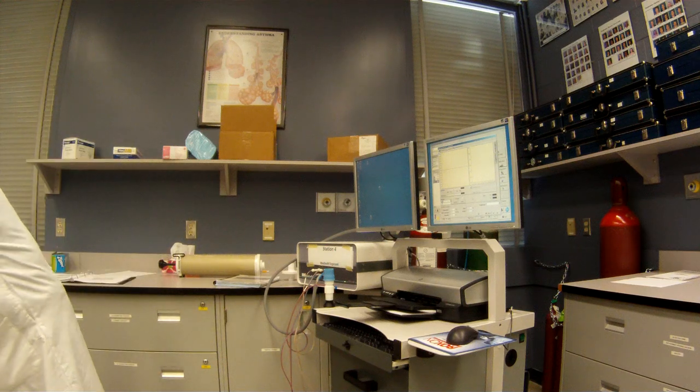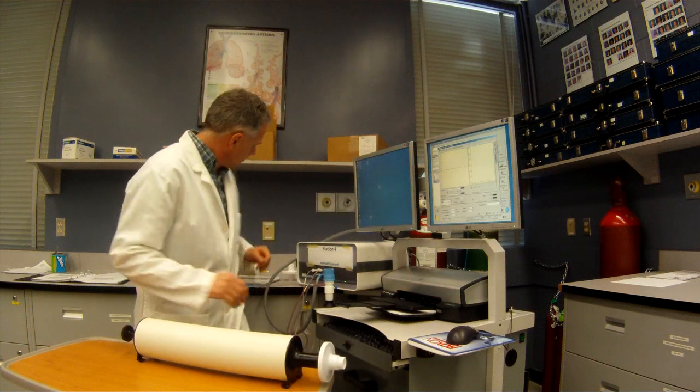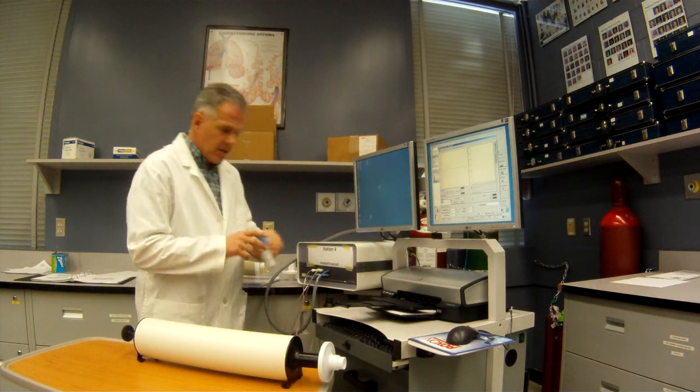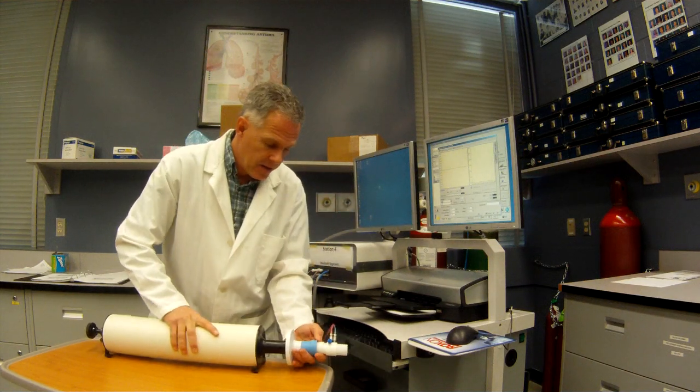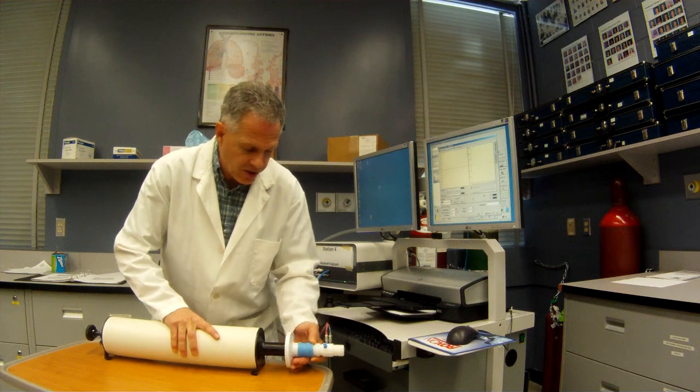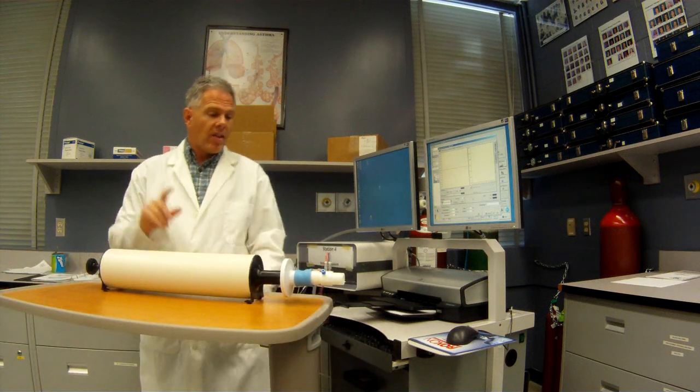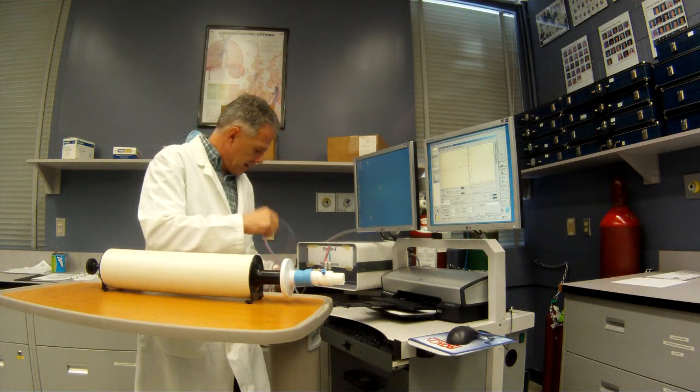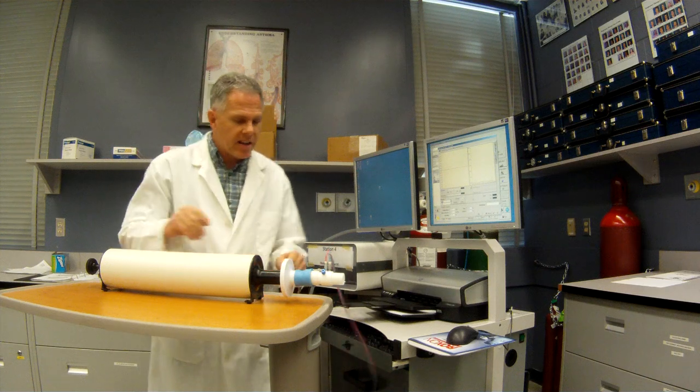So I've got our calibration syringe set up right here. And I'm going to be watching this screen, hook up our pneumotac. So it's hooked up just like it would be with a patient. Except, of course, we've got the calibration syringe on here. Now, this is a very precisely controlled 3-liter syringe. Make sure we don't have any kinks in our tubing or anything like that. No little tears or anything.